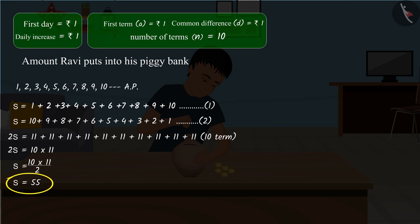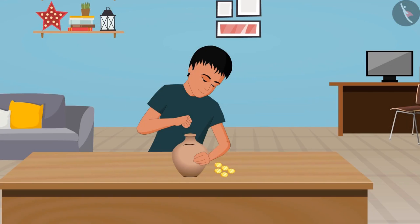Hence, Ravi has collected a total of 55 rupees in his piggy bank so far.